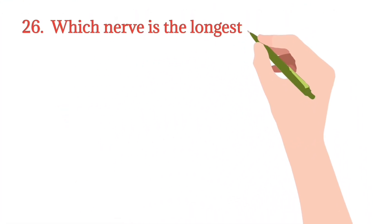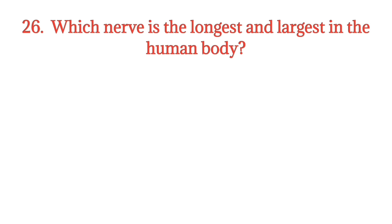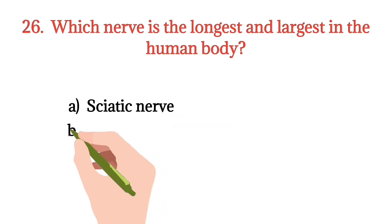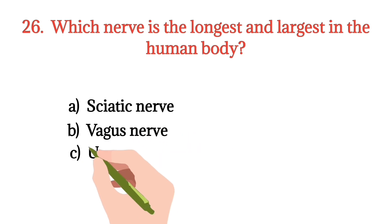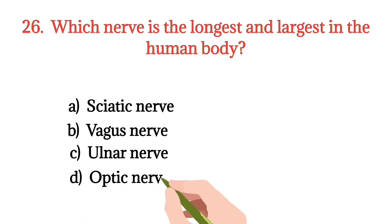MCQ number 26. Which nerve is the longest and largest in the human body? Option A: Sciatic nerve. Option B: Vagus nerve. Option C: Alar nerve. Option D: Optic nerve. The right option is Option A.